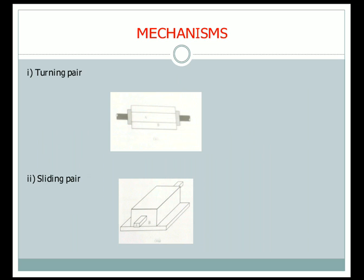The first one is the turning pair. There are two components, A and B. A is a rod inside a hollow pipe B, and A is fixed at both ends so we cannot remove A out of B. We can only rotate A inside B. The motion is completely constrained — we cannot separate link A from link B.